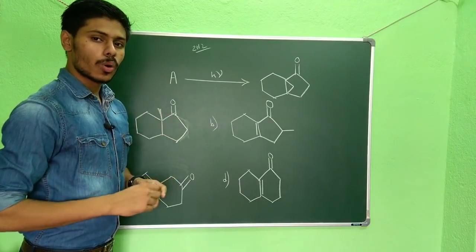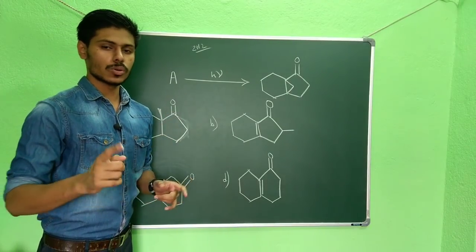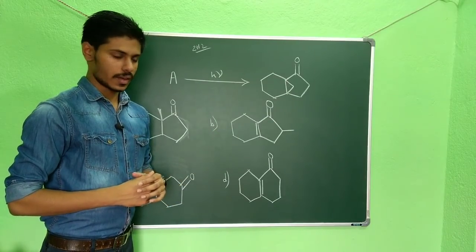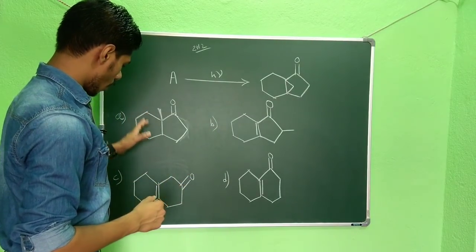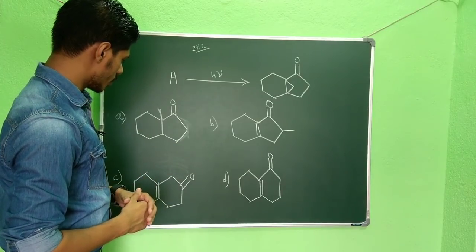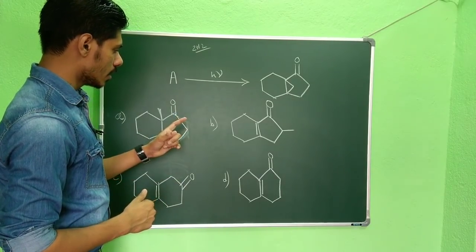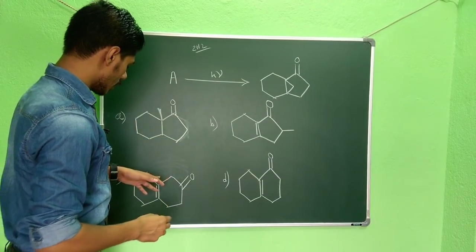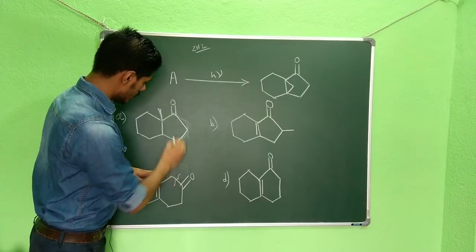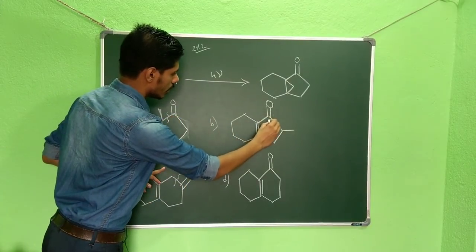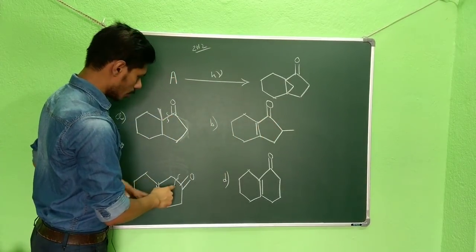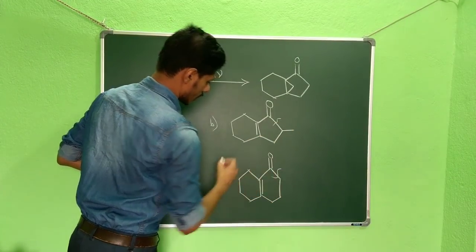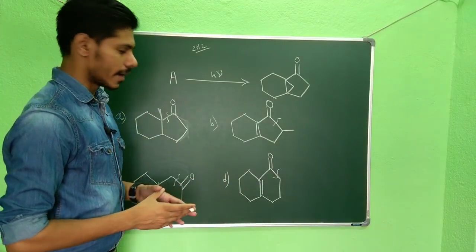So we are only left out with Norrish type 1 reaction. Now in all the cases if a Norrish type 1 reaction happens, then in case of A and C the cleavage will be from this side, and in B and D it will be from this side, so that will give you the most stable radical.